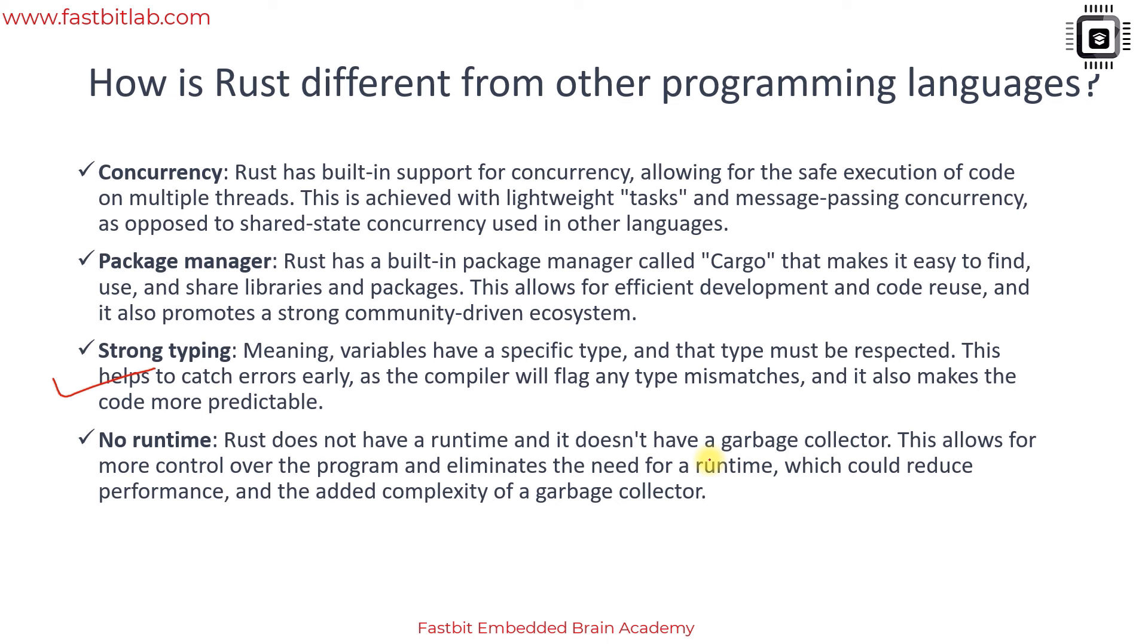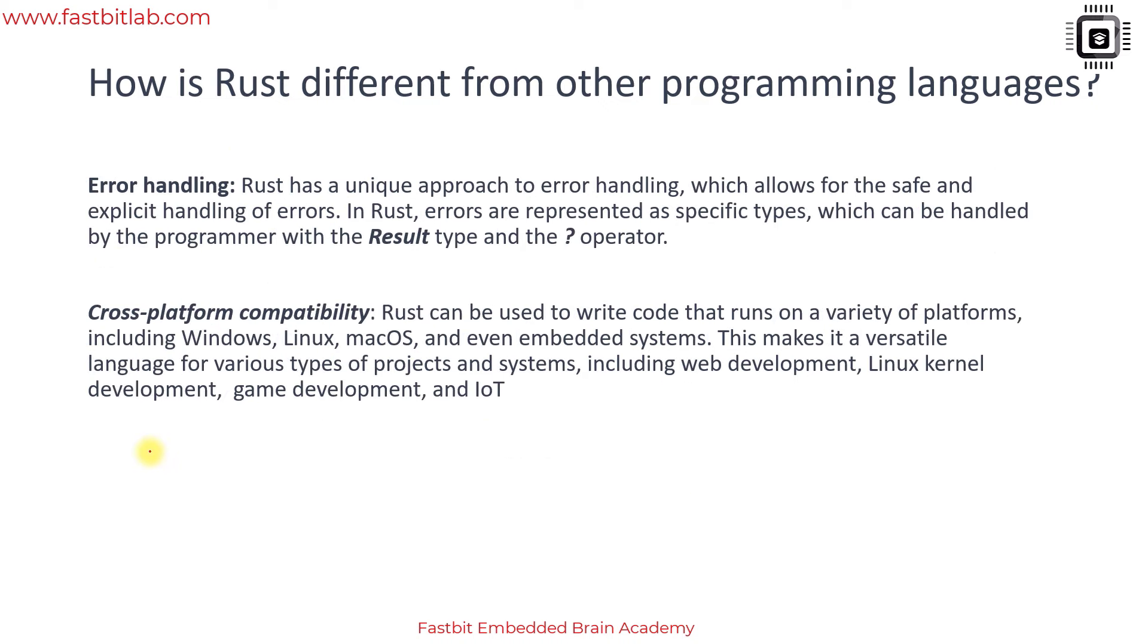And strong typing meaning variables have specific type and that type must be respected. We'll see that while doing some exercises. No runtime - so Rust does not have a runtime meaning it doesn't have a garbage collector like Java. C++ also doesn't have garbage collector.